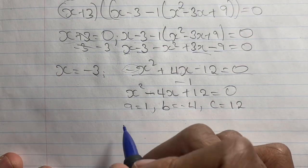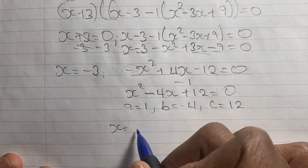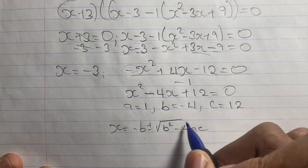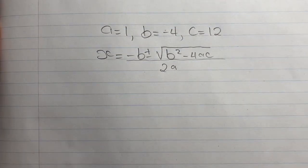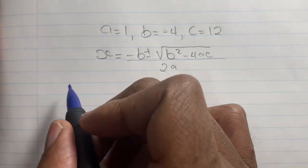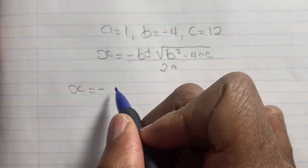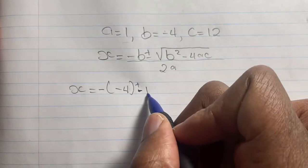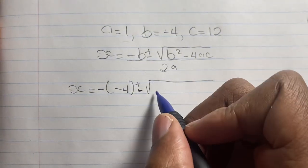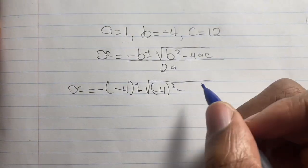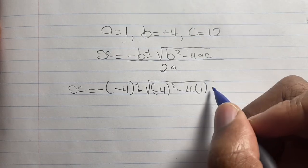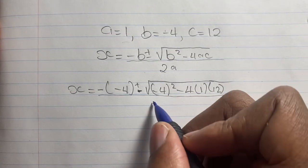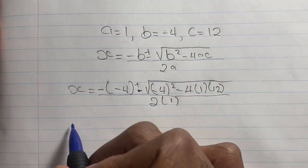We plug these values into the quadratic formula: x equals negative b plus or minus the square root of (b squared minus 4ac), all over 2a. So x equals negative (negative 4), plus or minus the square root of (negative 4 squared minus 4 times 1 times 12), all over 2 times 1.